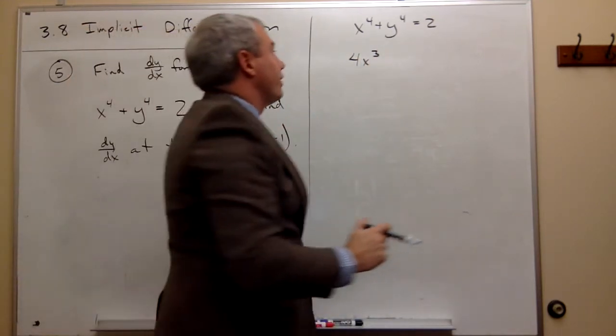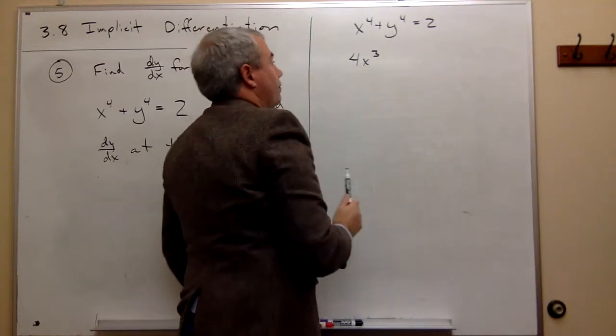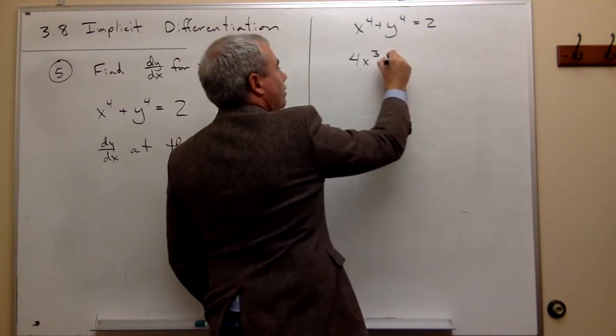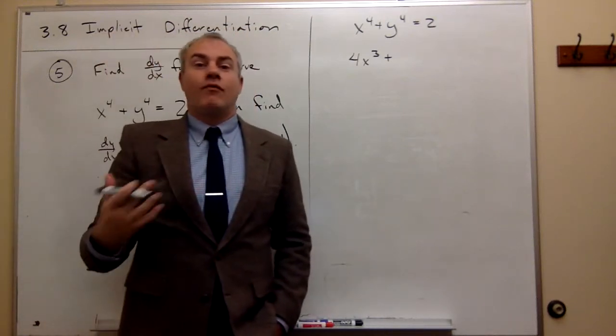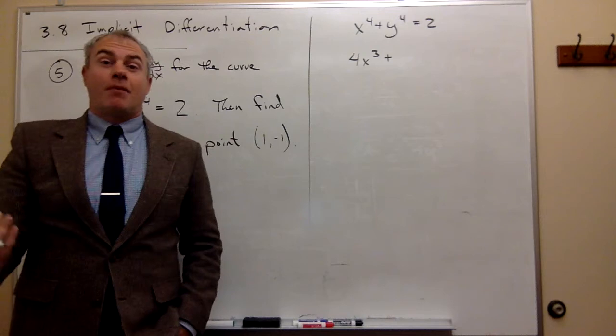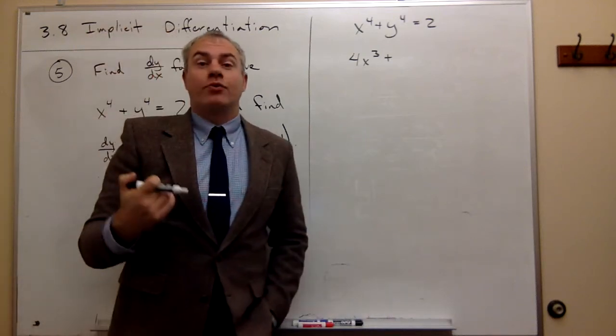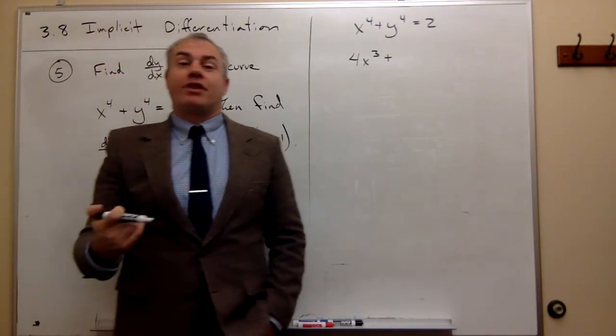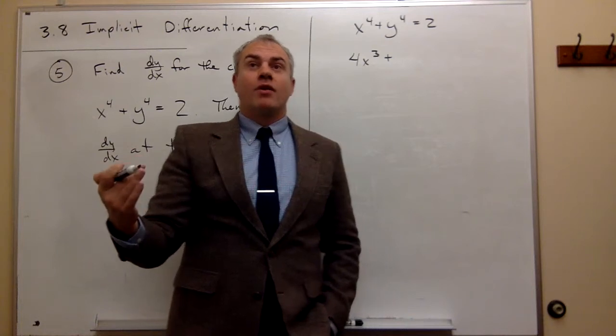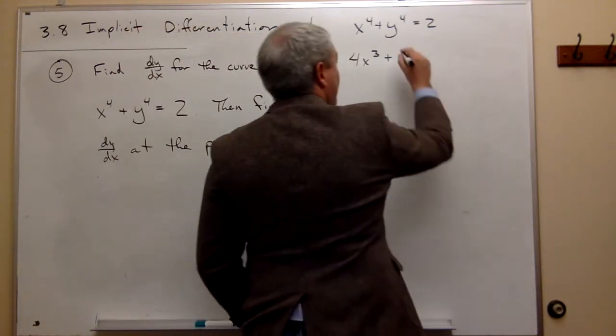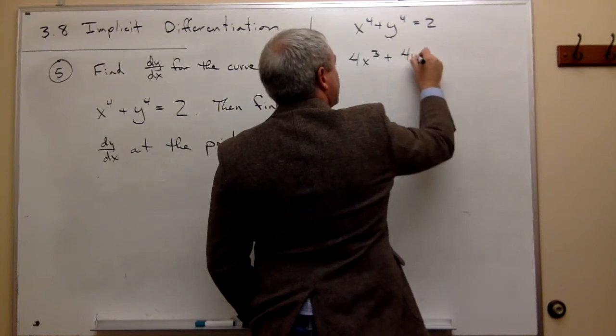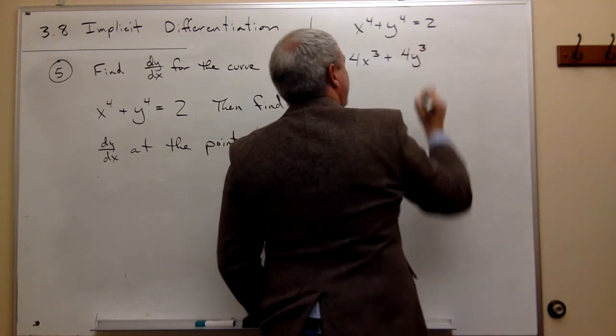Now we want to take the derivative of the y^4 piece which is a little bit different. When I take the derivative of y^4, you can think of y as just being something. And how do we take the derivative of something to the fourth power? Well, the derivative of something to the fourth power we know by the chain rule is four times that something to the third power.